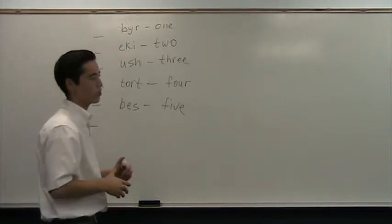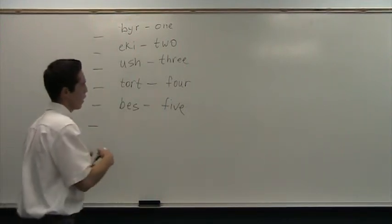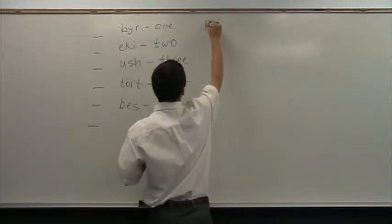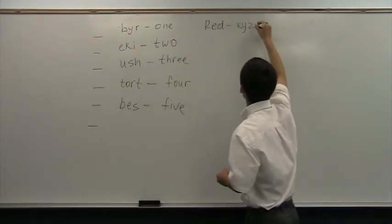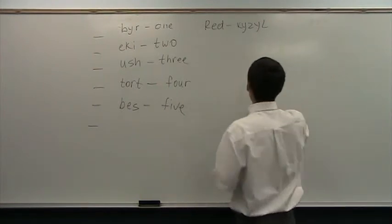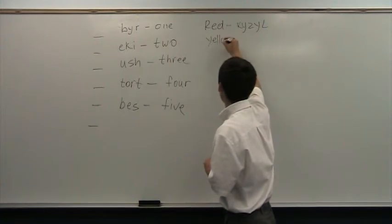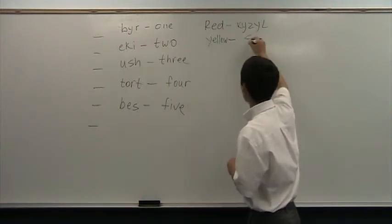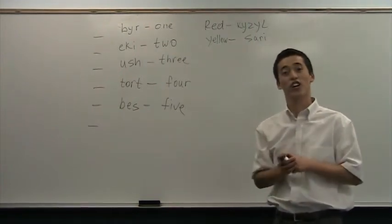But now let's learn some colors. Let's start from red. How do we say red? Kızıl. Kızıl. Red. Next one, yellow. Sarı. Sarı. Like a sarı. Sarı. Yellow.